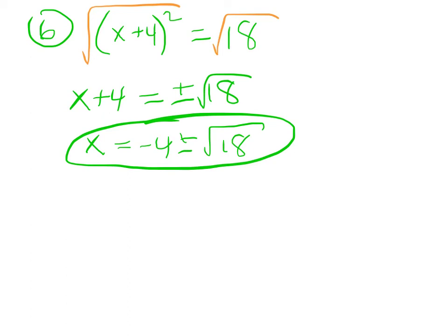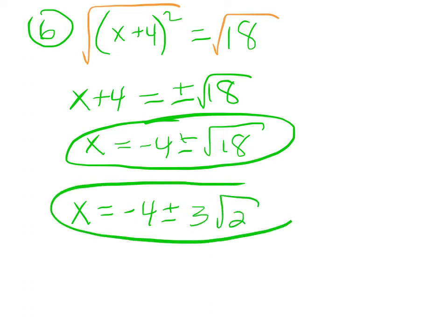But you can also simplify what's under the radical, and we get x equals negative 4 plus or minus 3 root 2. Either of those answers would be acceptable.